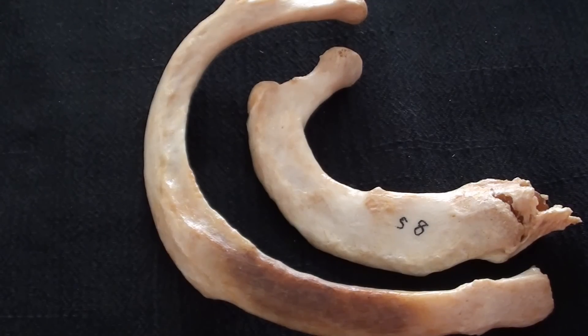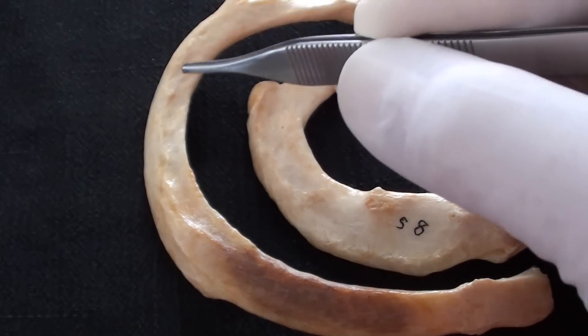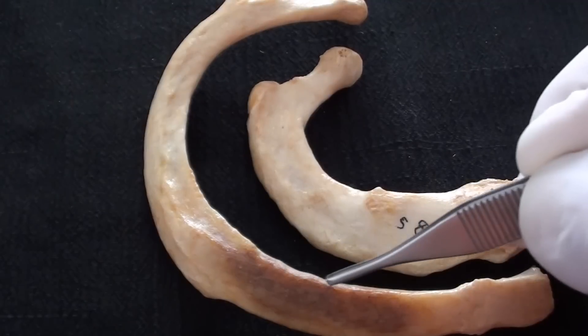While keeping rib number one in the picture, we are adding rib number two that is also considered to be atypical.